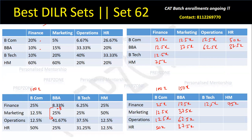Similarly, for BTech, I know 6.25 into 4 is 25%, so 12.5X times 4 is 50X. Now, the total BTech students: since 25% is 50X, then 100% will be 200X. Also, 37.5% is 50% of 25%, so 50% of 50X will be 25X. So the total becomes 75X.